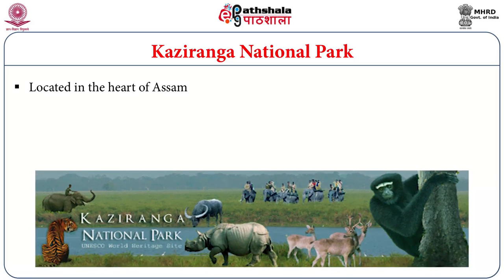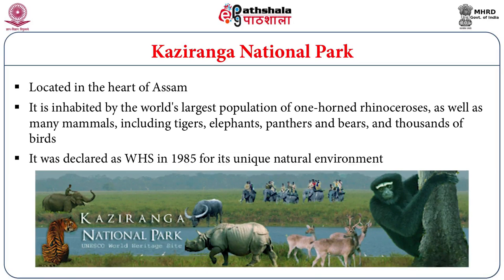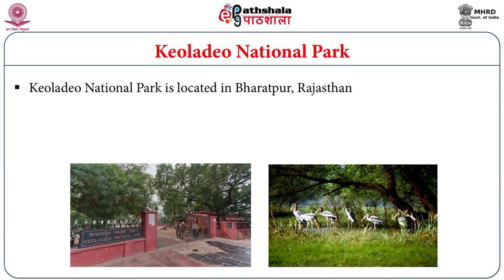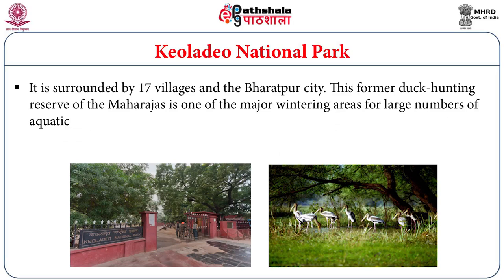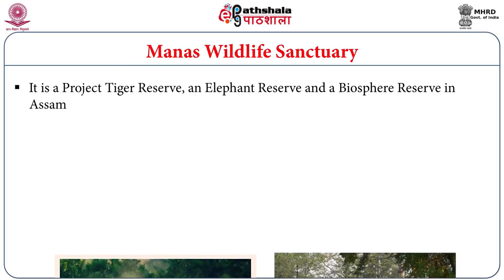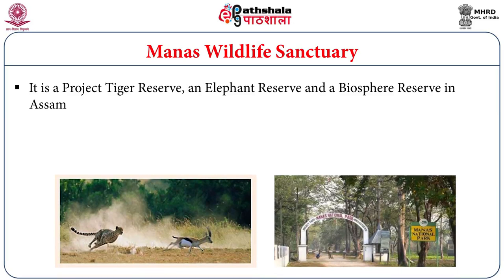Kaziranga National Park is also a Natural World Heritage Site, with its status given in the year 1985. It reflects rich biodiversity and is located in the state of Assam. Keoladeo National Park, or Bharatpur National Park as it is generally called, is located in Bharatpur in the state of Rajasthan. It was listed as a World Heritage Site in the year 1985 for its natural and biological importance. It has more than 364 different species and is one of the best places for migratory birds arriving in large numbers from countries like Afghanistan, Turkmenistan, China, and Siberia.